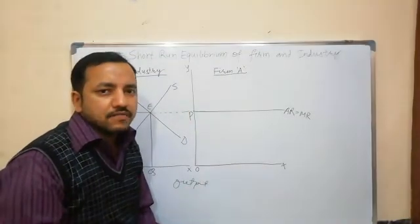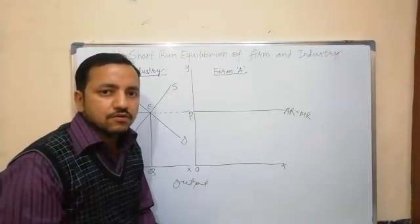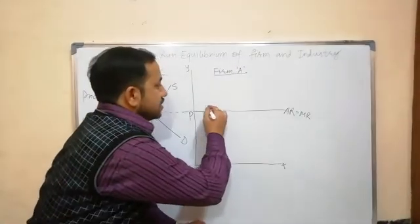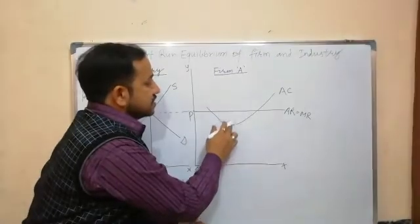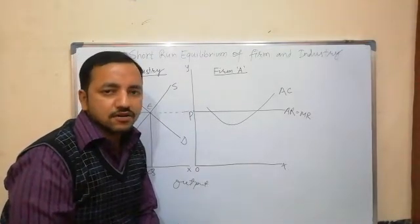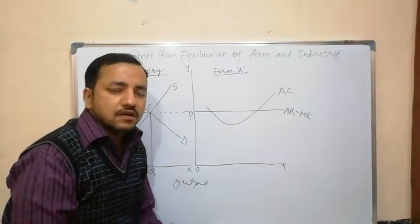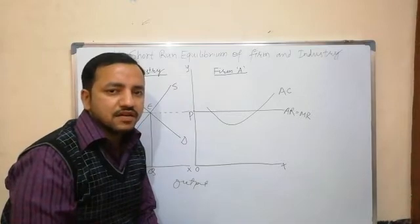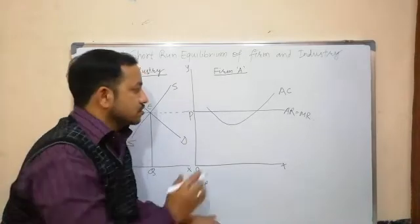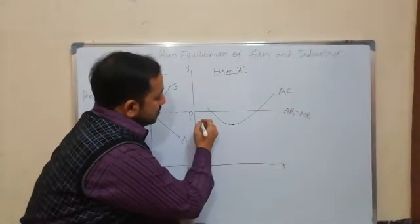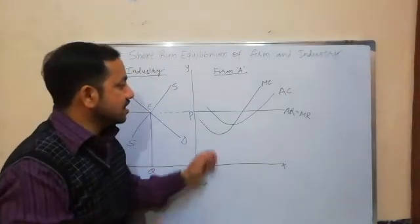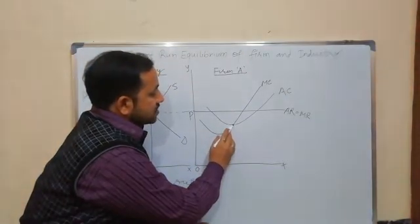Firm A is earning super normal profit. We plot the average cost curve AC below the average revenue curve. The marginal cost curve MC first declines, reaches a minimum point, and thereafter increases. As the MC curve rises, it cuts the average cost curve at the minimum point of AC.